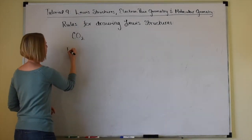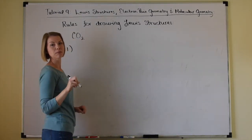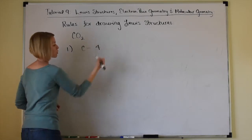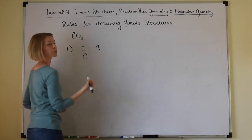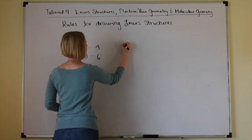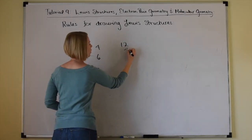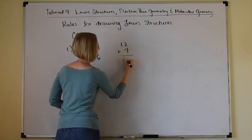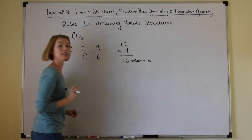Rule number one: add up all the valence electrons. Carbon is in group 4A — four valence electrons. Oxygen is in group 6A — six electrons each, and there are two of them, so 12 for the two oxygen atoms. Four plus twelve gives us a total of 16 valence electrons.